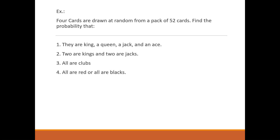If you look at the problem, immediately you can see that for the first problem, as we have one card from each of kings, queens, jack, and aces — as you know there are four kings altogether — it's a combination. We can write 4C1 for the first one. Similarly for queen, we'll get 4C1, and for jack and for ace. Four cards are drawn at random, so if I want to find the probability, please try it out and give me the solution.